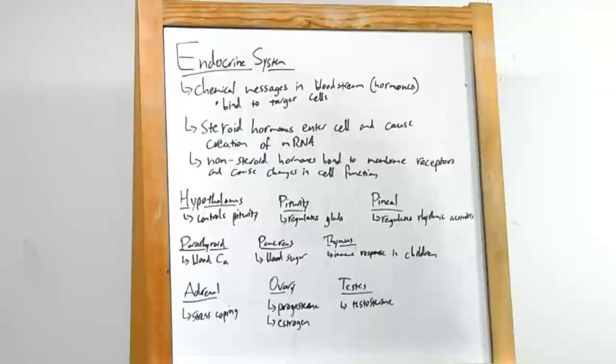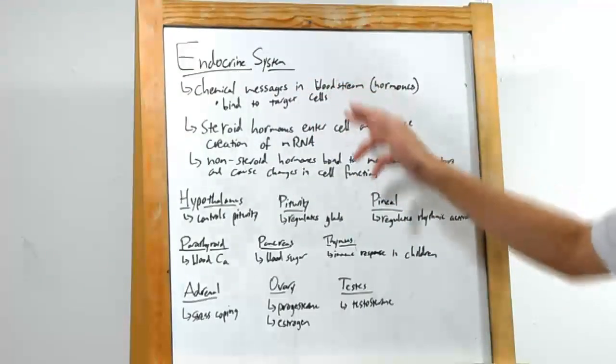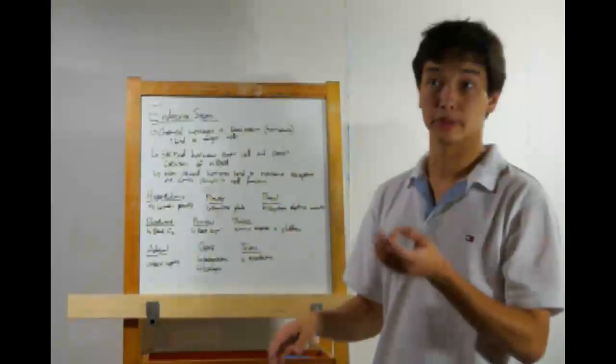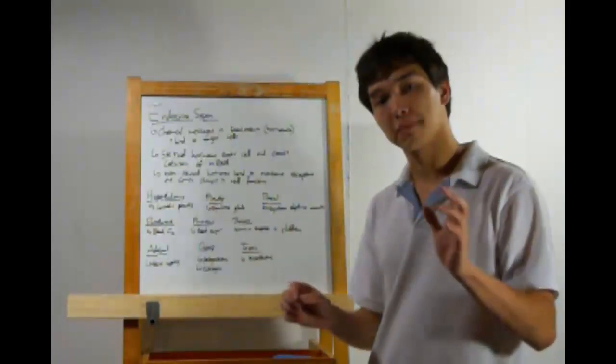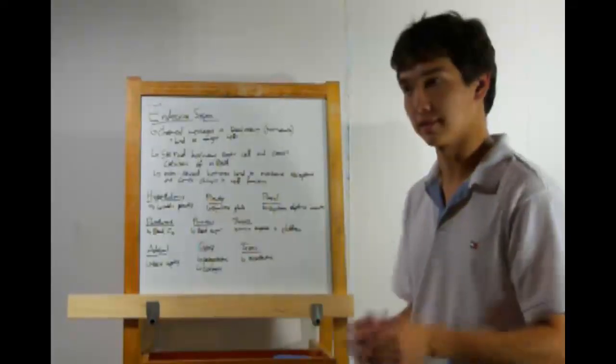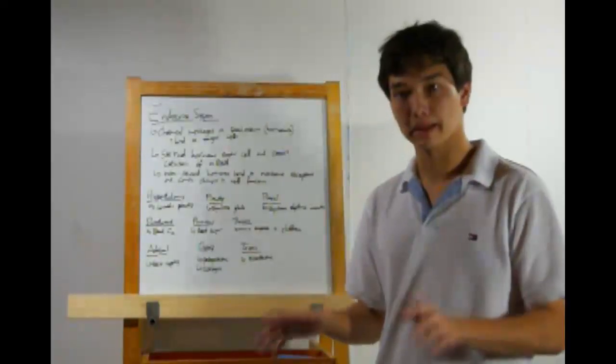Let's start with the endocrine system. That releases chemical messages into the bloodstream known as hormones, as opposed to the nervous system which releases them through electrical impulse. Now these hormones can only bind to specific cells, target cells. Any other type won't be able to affect them.